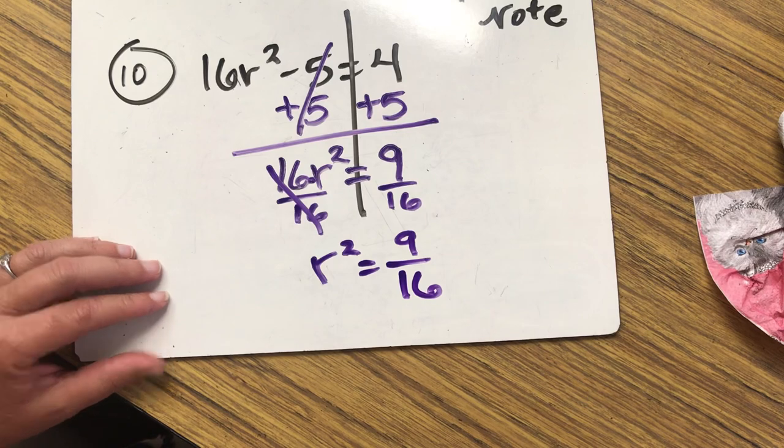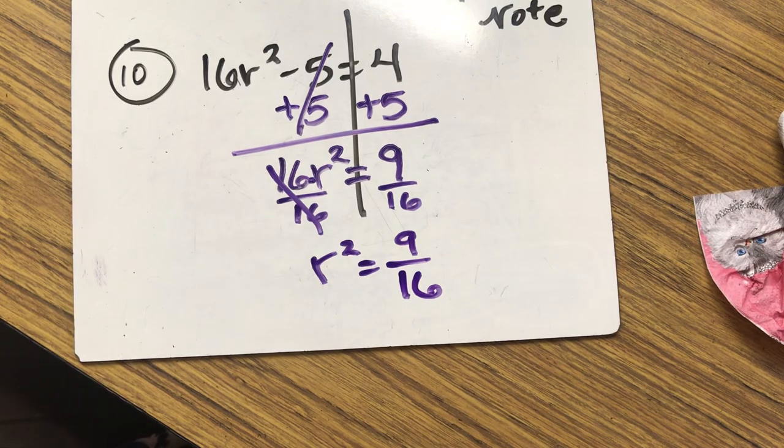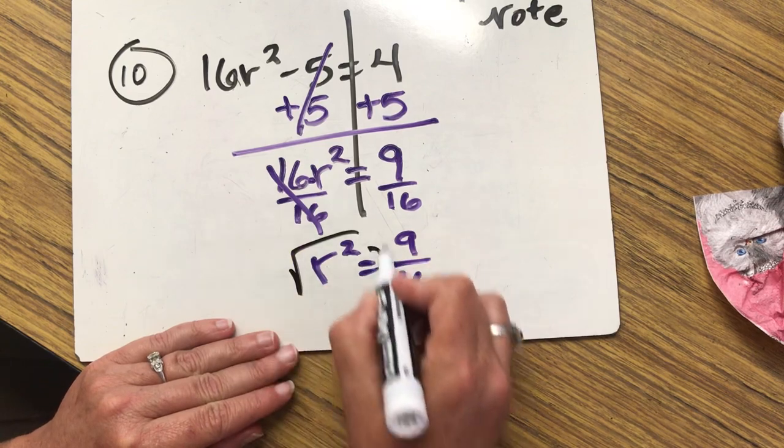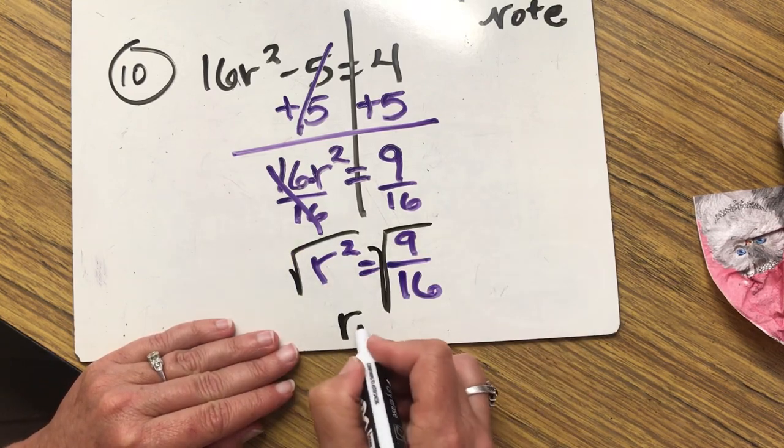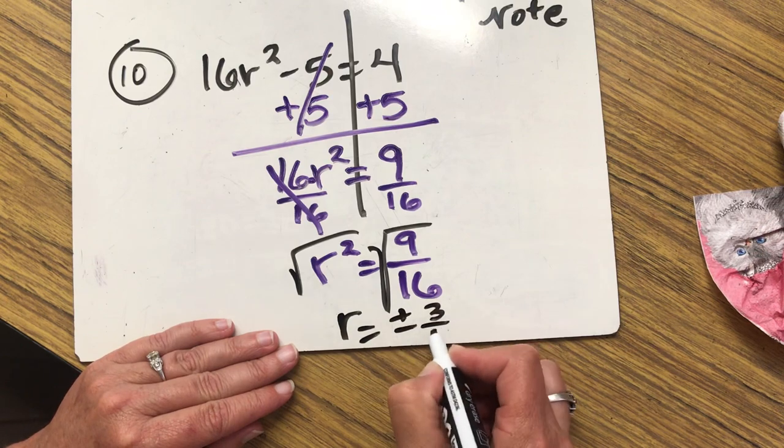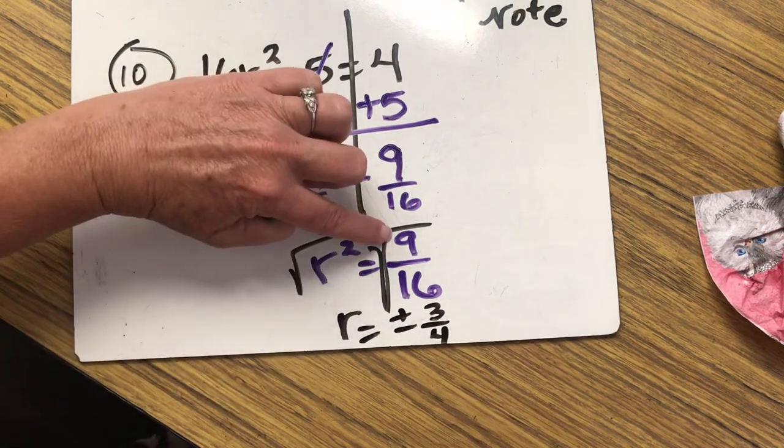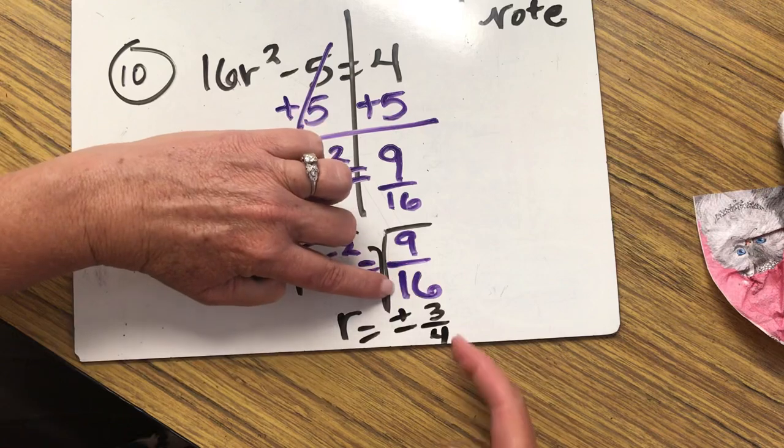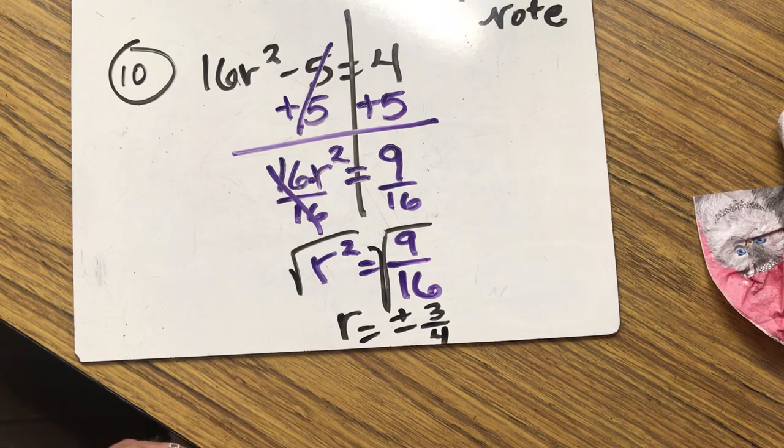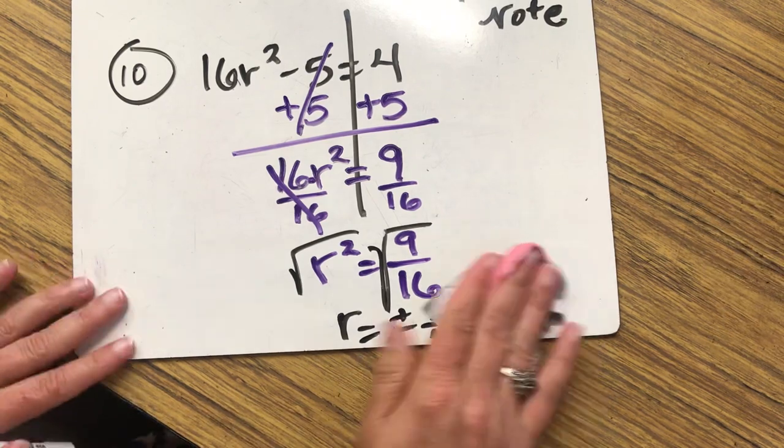9 is a perfect square. 16 is a perfect square. R squared is a perfect square. We are ready to go. R equals plus or minus 3 all over 4. The square root of 9 is 3. The square root of 16 is 4. It's not 8. I know you're probably thinking 8, but that's not it. Plus or minus 3 all over 4.